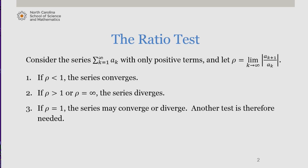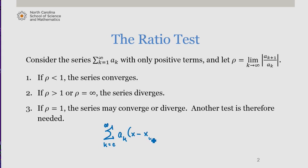Since power series are of the form the sum from k equals some value to infinity of a sub k times x minus x naught to the kth power, the ratio test is a natural choice as a test of convergence, since ratios of successive terms are usually quite reasonable to work with. Let's apply this test to an example.